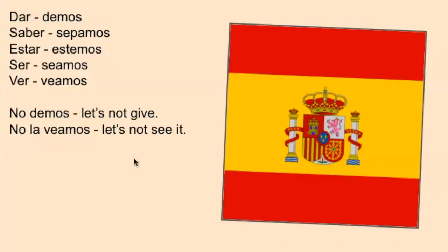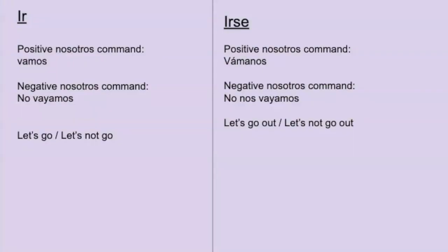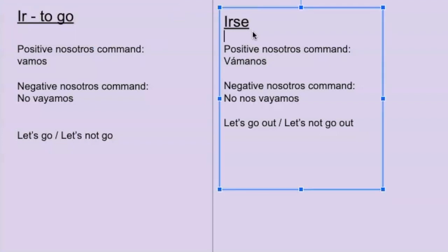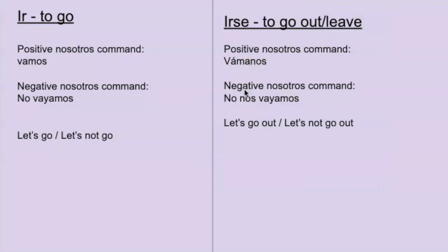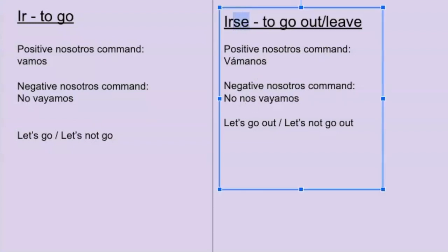Here's another special case: 'ir' and 'irse.' 'Ir' is 'vamos' — 'let's go.' However, the negative version doesn't just put 'no' in front — it changes to 'no vayamos.' You add this 'y.' It's not 'no vamos' — it's always 'no vayamos.' And 'vamonos' is actually 'irse' — 'let's go out' or 'let's leave.' They technically mean the same thing situationally. So 'vamonos' and 'no nos vayamos' — these two are the same structure, just with 'nos' added because it's reflexive. You also have to add an accent there.